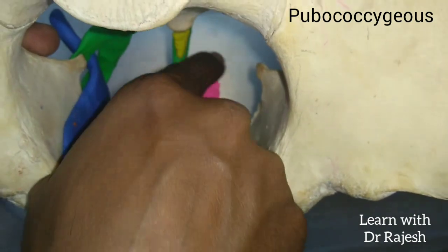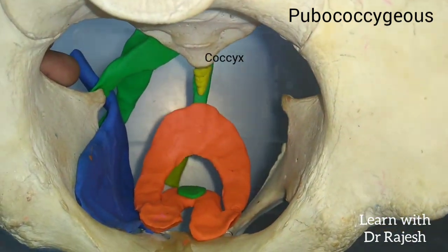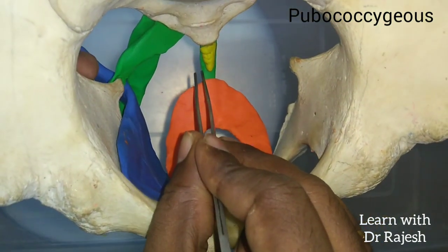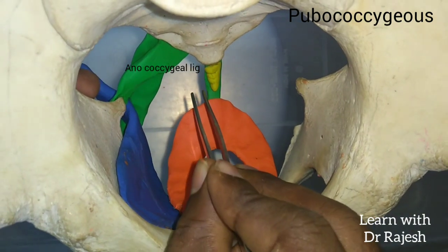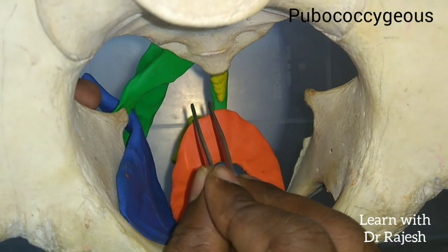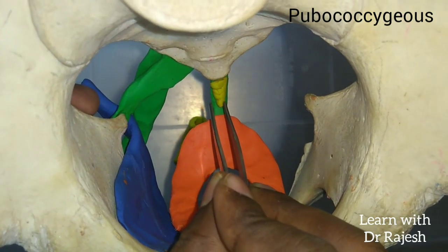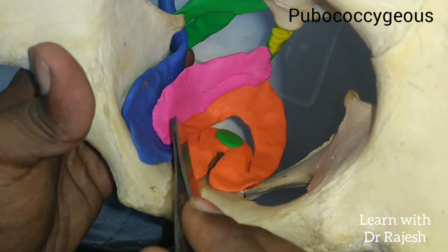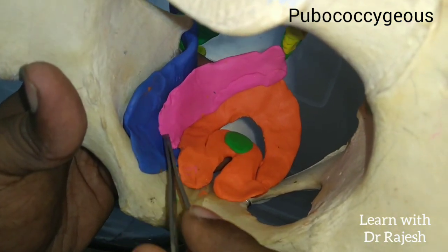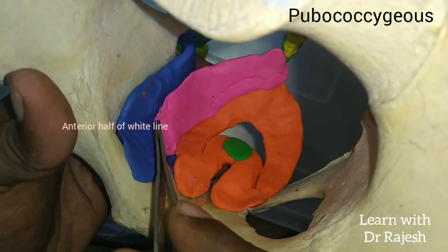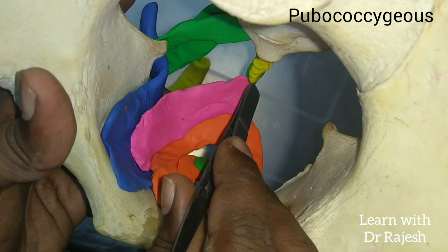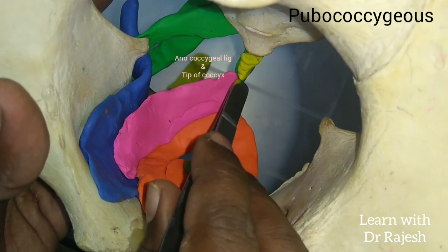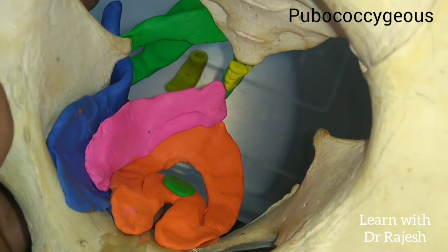The posterior fibers get inserted into the anococcygeal ligament — the green structure — and the tip of the coccyx — the yellow structure. So the posterior group of fibers originates from the anterior half of the white line (tendinous arch) and gets inserted into the anococcygeal ligament and the tip of the coccyx.